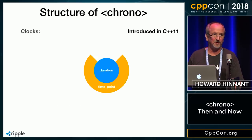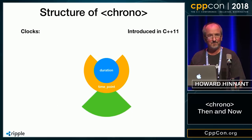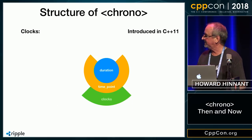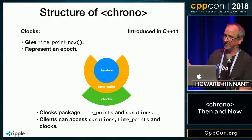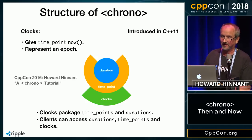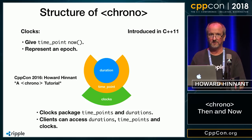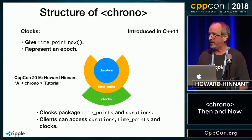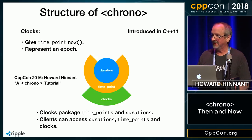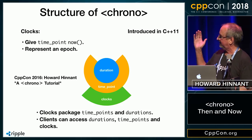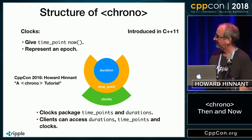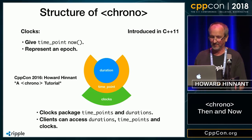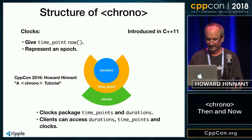Clients can access both time points and durations, and there are clocks, which are just a collection of time points and durations and some function that tells you the current time. If you want to know more about chrono, see my talk from two years ago titled "A Chrono Tutorial" at CppCon — you can find that on YouTube.